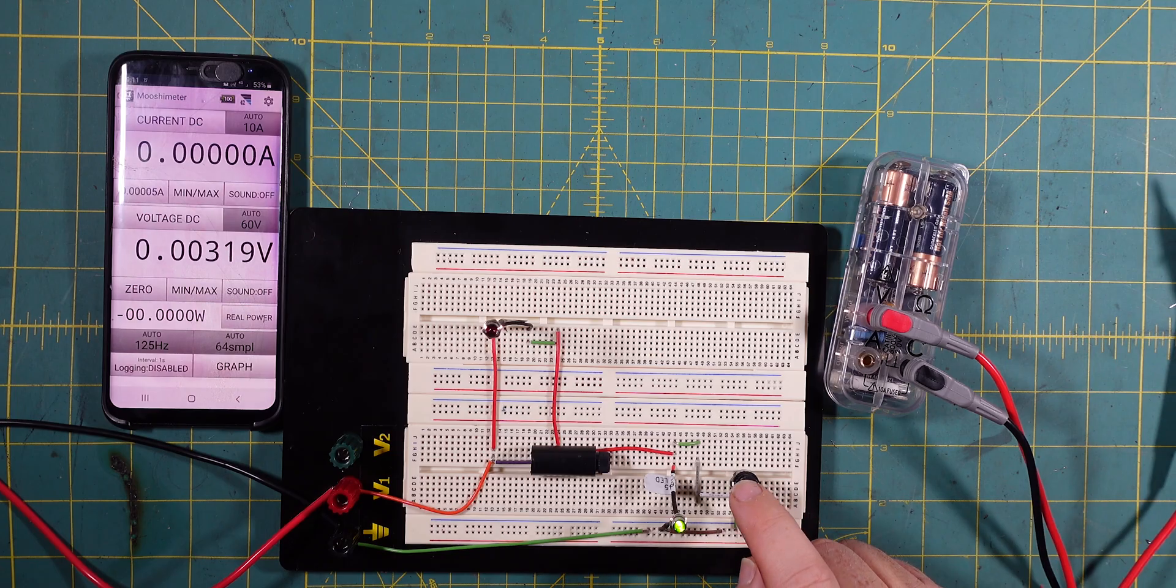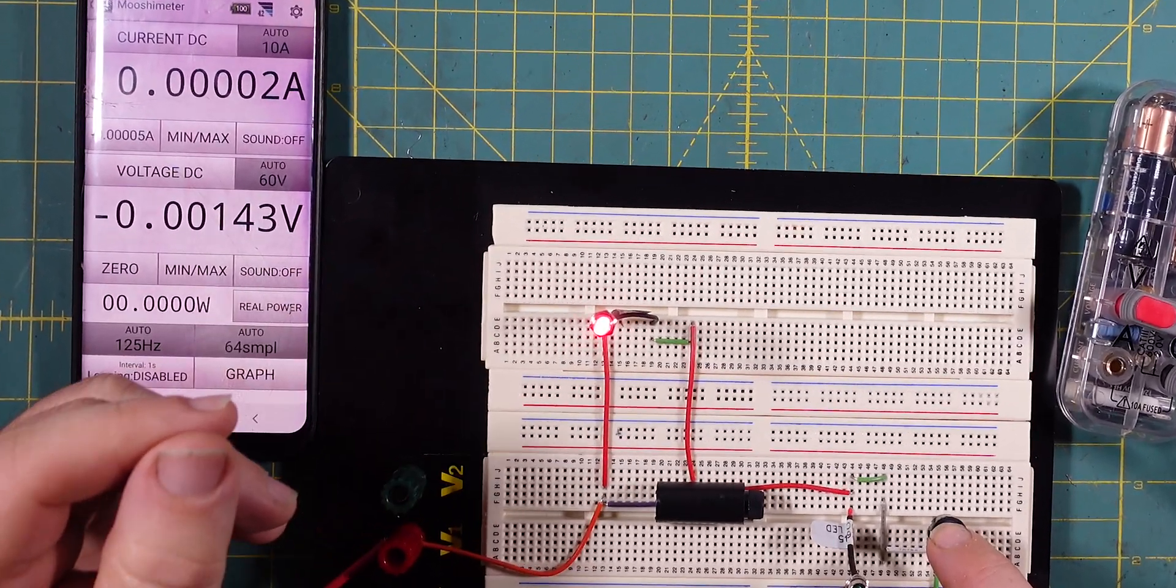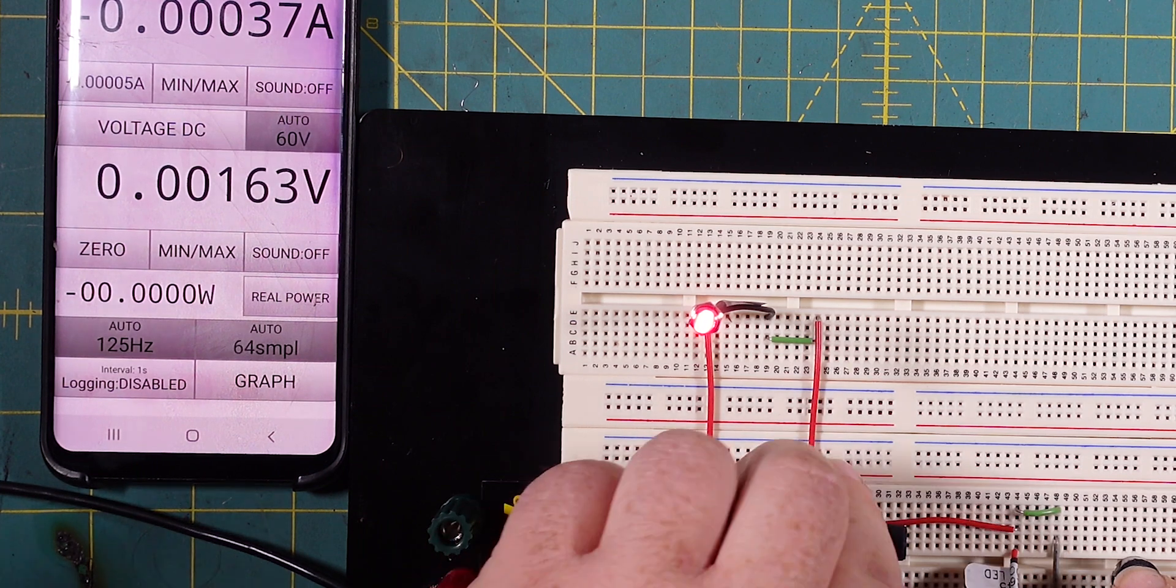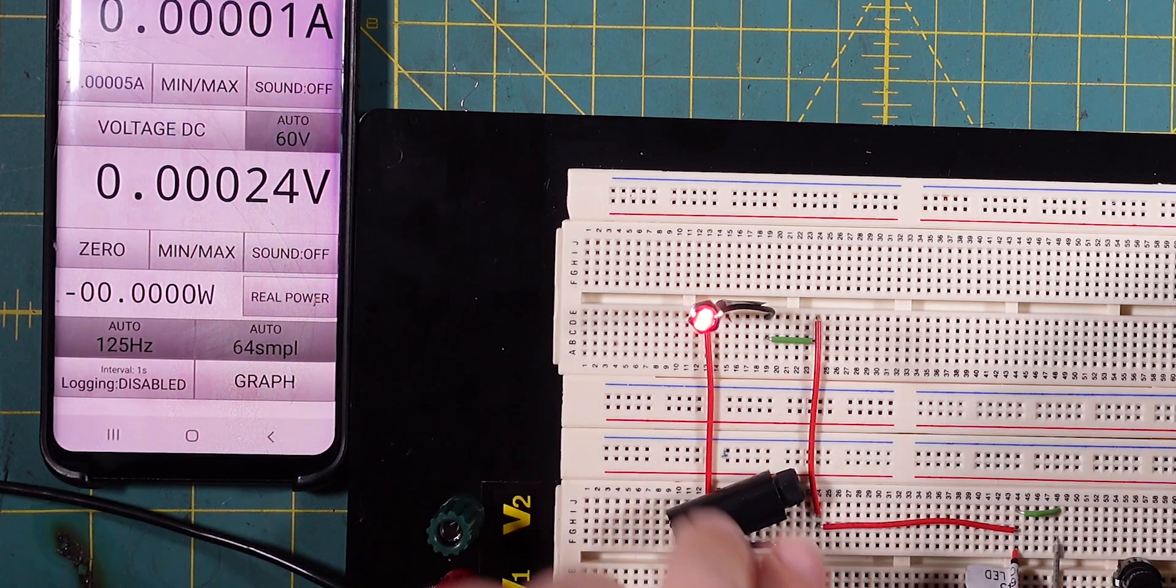But when we press the button our light turns on and our fuse is blown. So we can pull that out and I might actually swap it over